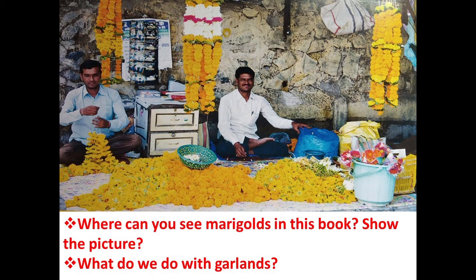Next question: what do we do with garlands? Now children, do you know what garlands are? When we have some puja in the house or a good occasion, you get a garland and put it on the photo of your god or hang it on the door. Can you see in this picture where these two men are sitting? Down there are all marigold flowers and on top there are garlands hanging. A garland is used during puja to put on the photo frame or idol of a god. Sometimes when welcoming a chief guest, you make that person wear a garland.